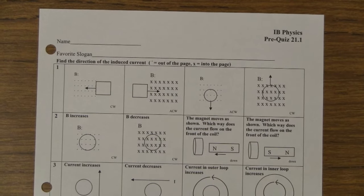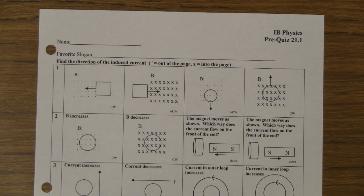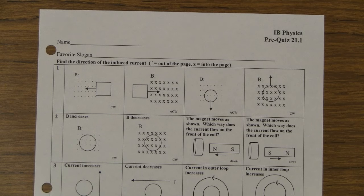I'm going to try this style of video for showing you the directions of the currents in pre-quiz 21.1. Remember that the rule is that the current flows in such a way as to resist the change in flux. So if the flux is increasing, the current opposes that change. If you gain some amount of flux, you oppose it. If you lose a certain amount of flux, the current flows to replace it. If it's a magnet moving, you oppose the motion of the magnet.